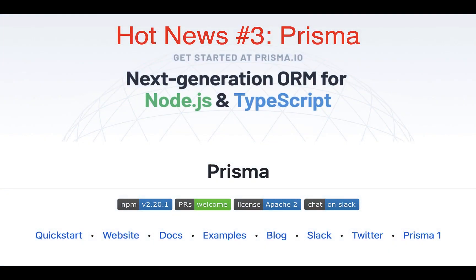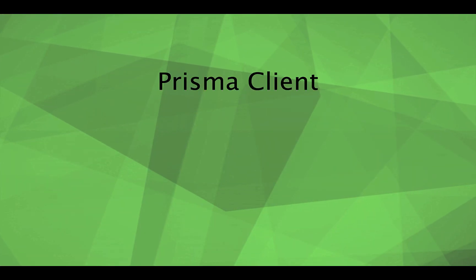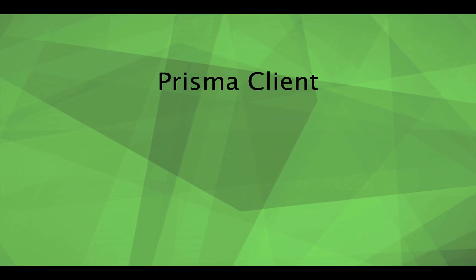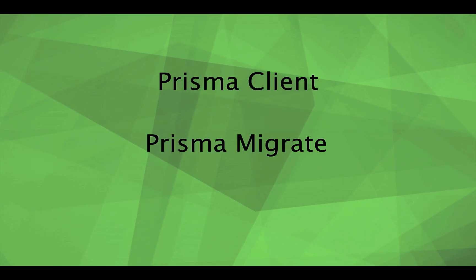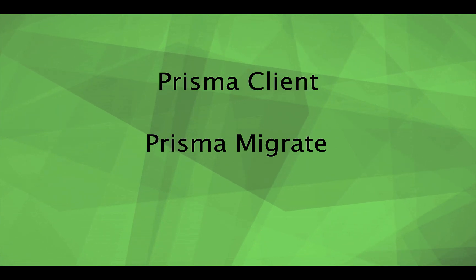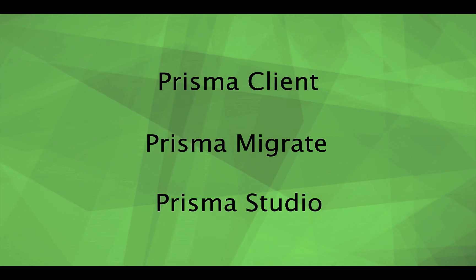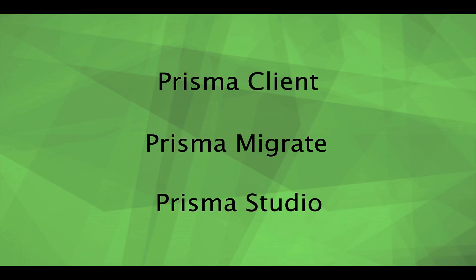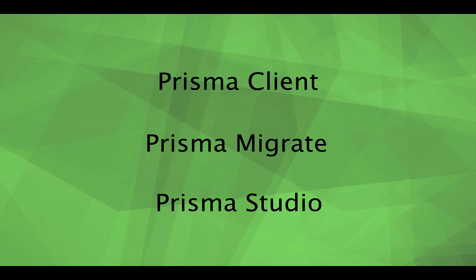Prisma is an open-source, next-generation database schema migration tool. It contains a query builder called Prisma Client, a migration system called Prisma Migrate, and a GUI to view and edit your data called Prisma Studio.